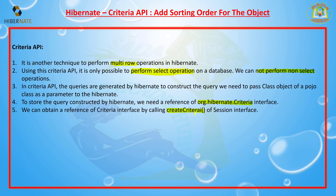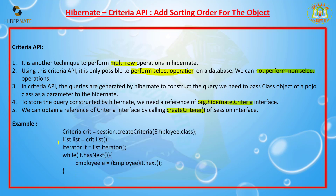The createCriteria() method takes a class object of a POJO class as its argument and returns the Criteria reference. If you execute this criteria, it will return a list of all records from the database.